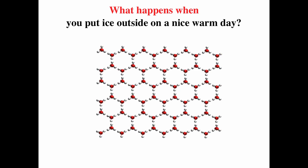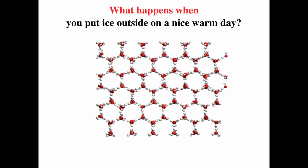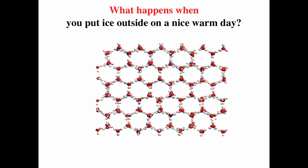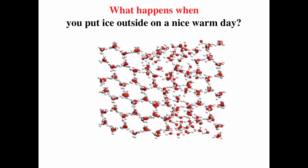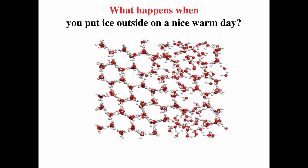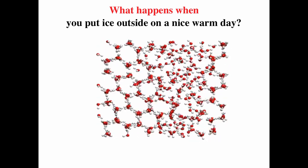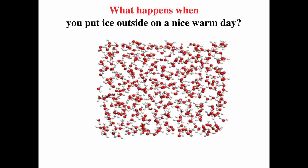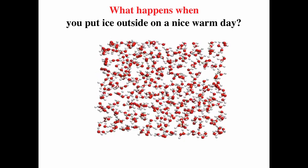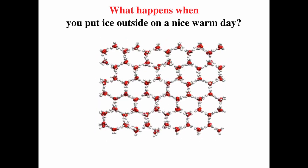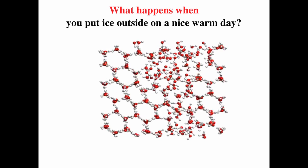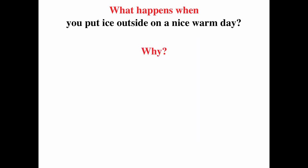What happens when you put ice outside on a nice day? Obviously it melts. We can think about this at an atomic level: as you increase the temperature, increasing the kinetic energy, eventually the molecules partially overcome the intermolecular forces, producing liquid molecules. So you go from being a solid into a liquid. Is there another way of thinking about that — say on the macroscopic level — of why ice melts on a hot day?